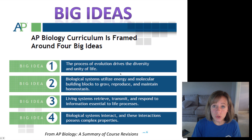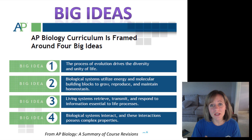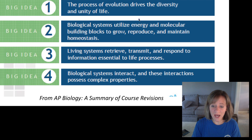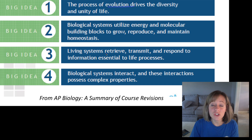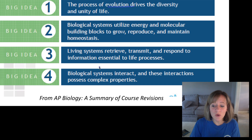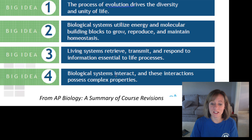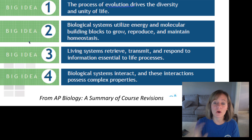Here is the framework for this new AP Biology class, and these next slides are directly from the College Board. There are four big ideas. The first one has to do with evolution. The second has to do with how living systems need energy and molecular building blocks to grow. The third is all about information transmission — DNA, RNA, and genetics. The last one is more ecology: the idea that all systems are constantly interacting and that these interactions possess complex properties. As we go through the course, I will always be referring to which big idea we are on.